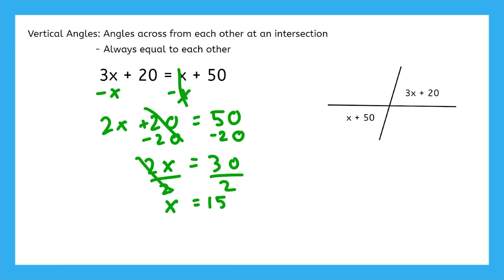If you want to check our answer, we plug it into both angles. 15 plus 50 is 65. And on the other angle, 3 times 15 is 45 plus 20 is 65. They match just like they should.